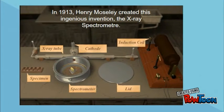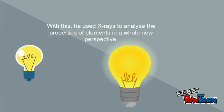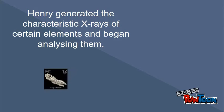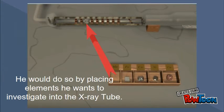In 1913, Henry Moseley created this ingenious invention: the X-ray spectrometer. With this, he used X-rays to analyze the properties of elements in a whole new perspective. Henry generated the characteristic X-rays of certain elements and began analyzing them, placing elements he wanted to investigate into the X-ray tube, as shown in the example present.